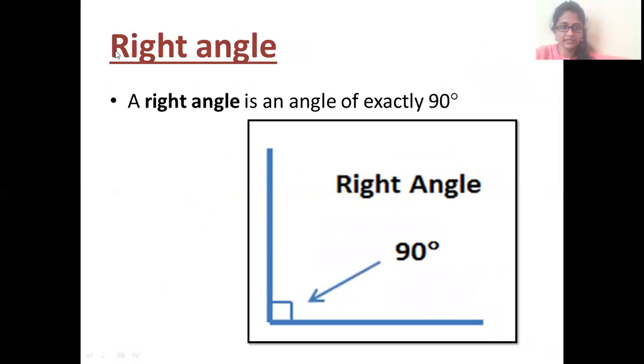And the second type of angle, that is right angle. This measures exactly 90 degrees. Not even more than 90 or not less than 90. It means not even 89 degrees or not even 91 degrees. It's exactly 90 degrees. Something like L-shape as you can see here. That is called as right angle.